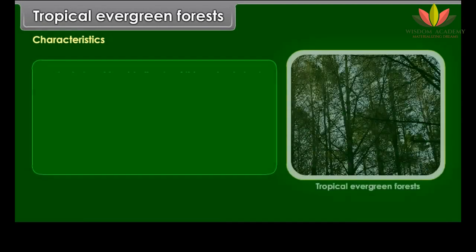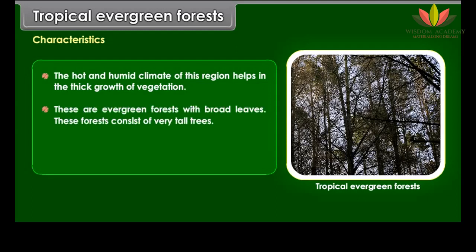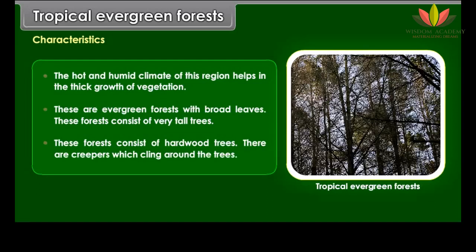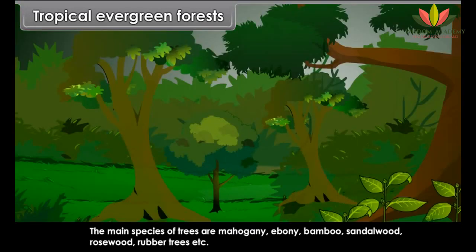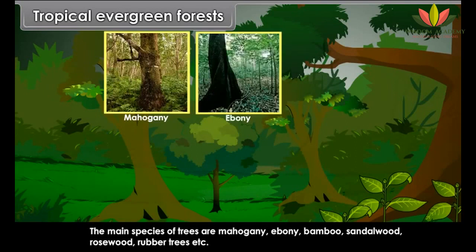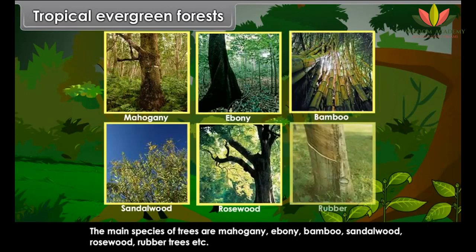Characteristics: The hot and humid climate of this region helps in the thick growth of vegetation. These are evergreen forests with broad leaves, consisting of very tall hardwood trees. There are creepers which cling around the trees. The main species of trees are mahogany, ebony, bamboo, sandalwood, rosewood and rubber trees.